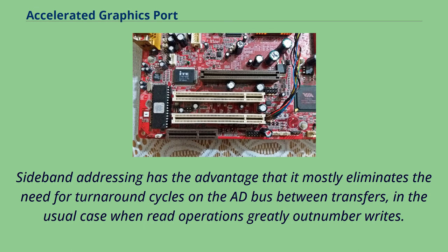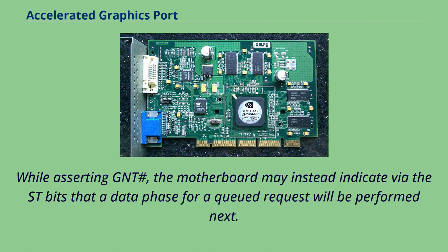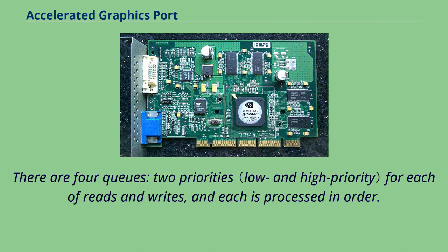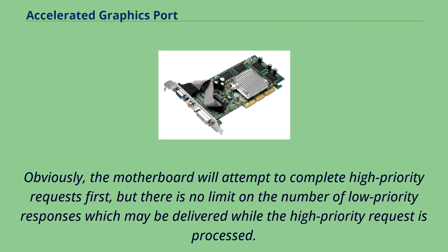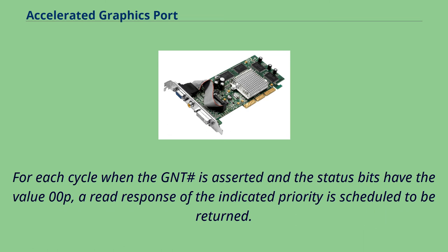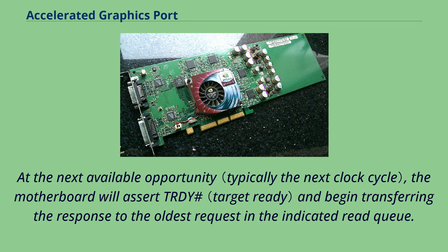Side-band addressing has the advantage that it mostly eliminates the need for turnaround cycles on the AD bus between transfers, in the usual case when read operations greatly outnumber writes. While asserting GNT#, the motherboard may instead indicate via the ST bits that a data phase for a queued request will be performed next. There are four queues — two priorities for each of reads and writes — and each is processed in order. The motherboard will attempt to complete high-priority requests first, but there is no limit on the number of low-priority responses which may be delivered while the high-priority request is processed. For each cycle when GNT# is asserted and the status bits have the value 00P, a read response of the indicated priority is scheduled to be returned. At the next available opportunity, the motherboard will assert TRDY# and begin transferring the response to the oldest request in the indicated read queue.